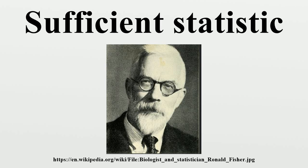Uniform distribution: If x₁, …, xₙ are independent and uniformly distributed on the interval (0, θ), then t = max(xᵢ) is sufficient for θ. The sample maximum is a sufficient statistic for the population maximum. The joint pdf, because the observations are independent, can be written as a product of individual densities using the indicator function. This takes the form required by the Fischer-Neyman factorization theorem, with h = 1 and the remaining expression being a function of only θ and t = max(xᵢ). In fact, the minimum variance unbiased estimator for θ is the scaled sample maximum, which is MVUE by the Lehmann-Scheffé theorem. The unscaled sample maximum t is the maximum likelihood estimator for θ.